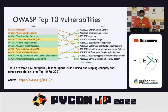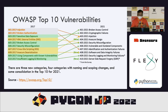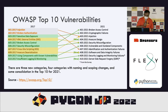Similarly, broken authentication was at number 2 in 2017 but has now been included in the A7 category. In 2021, they merged a few vulnerabilities into some categories and also introduced new vulnerabilities. The new vulnerabilities are insecure design, software and data integrity failures, and server-side request forgery. There are three new categories, four categories with naming and scoping changes, and some consolidation in the top 10 for 2021.